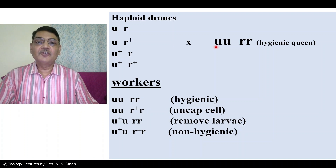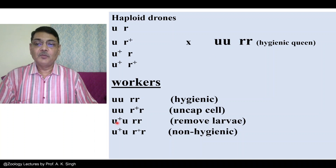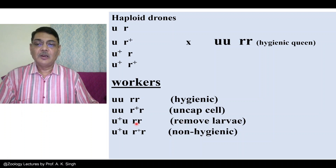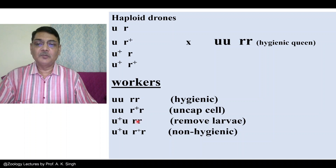In the third situation, if a male with genotype U-plus R is mated with the UURR queen, you will have workers of genotype U-plus U and RR. Such workers will not be able to uncap the cell, but they will be able to remove the larvae. So if you purposely remove the wax cap from the cell, workers of this genotype will be able to remove the larvae.